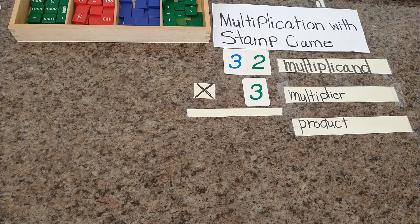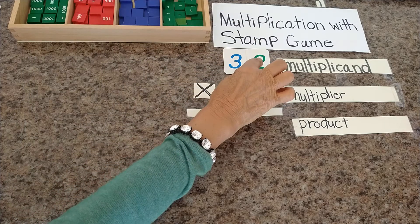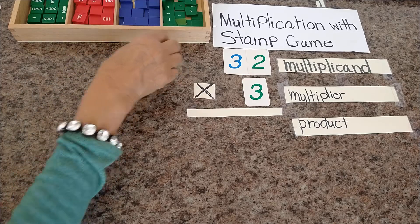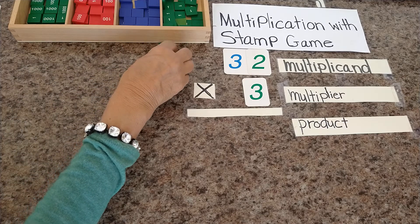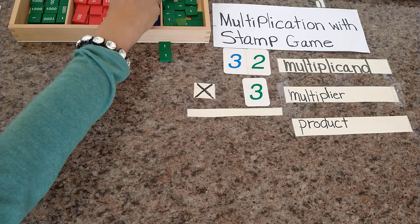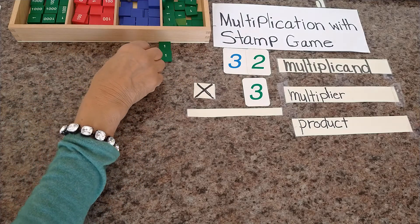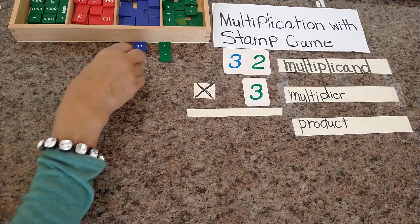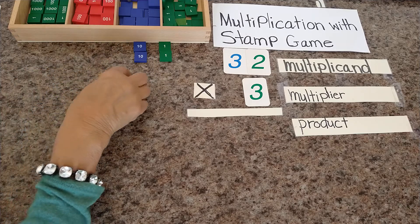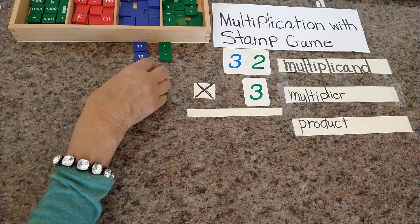So we need to bring 32 three times. We need to bring 2 units: one unit, two units. So how many tens do we need to bring? We need to bring 3 tens: one ten, two tens, three tens.